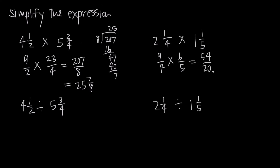The final answer must be a reduced improper fraction. We can reduce 54 over 20 by dividing both the numerator and denominator by 2, giving us 27 over 10. We can leave it as the reduced improper fraction 27 over 10, or change it to a mixed number. Since 10 goes into 27 two times (not three, because 10 times 3 is 30), we get 2 and 7 tenths. Either answer, 27 over 10 or 2 and 7 tenths, is acceptable.